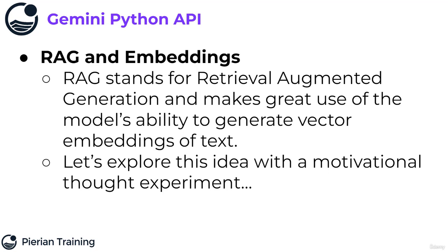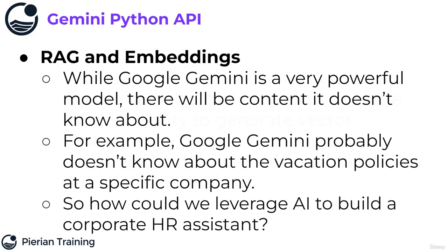I want to explore the idea of RAG with a motivational thought experiment. While we know that Google Gemini is a very powerful model, there's simply going to be content it doesn't know about — either very recent events or just stuff that wasn't in its training data. For example, Google Gemini probably doesn't know about the vacation policies at a specific company. But what if I want to build an AI that's basically a corporate HR assistant that can interact programmatically with all the employees at this company to answer HR-related questions? How would I be able to augment Google Gemini's powerful large language model tooling to actually understand context specific to my company?